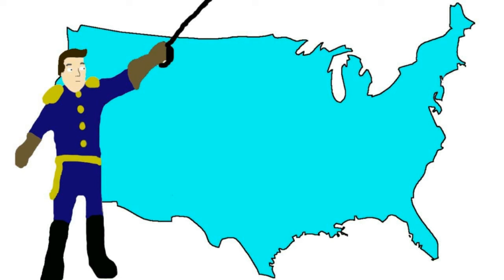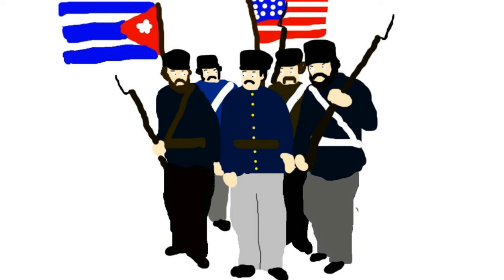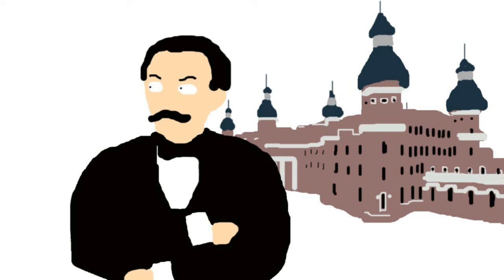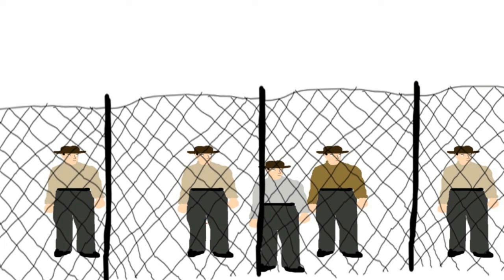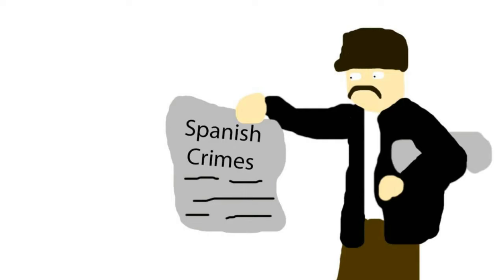Meanwhile the USA was the great power in the Western Hemisphere and wished to expand their influence. For decades Americans wanted to take over Cuba. There were attempts to buy the island and a few attempts by filibusters to take the island militarily. Plus the organizers of the revolution, like Jose Marti, were emigres living in the United States. So the US was pretty tied up to Cuba.